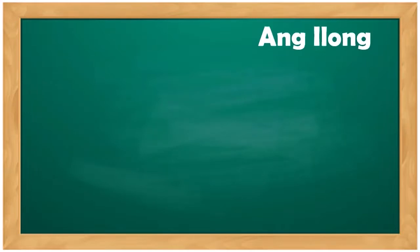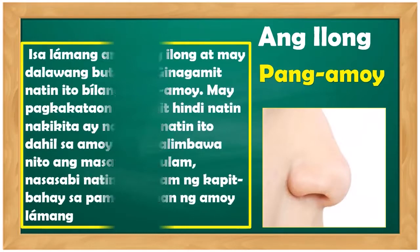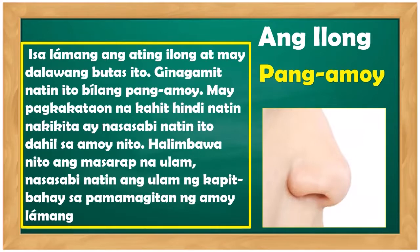Ang ilong ay ginagamit natin sa pangamoy. May iba-ibang itsura ang ating mga ilong, lalo na kapag tayo ay Pinoy. Isa lamang ang ating ilong at may dalawang butas ito. Ginagamit natin ito bilang pangamoy. May pagkakataon na kahit hindi natin nakikita ay nasasabi natin ito dahil sa amoy nito, halimbawa ang masarap na ulam ng kapitbahay.